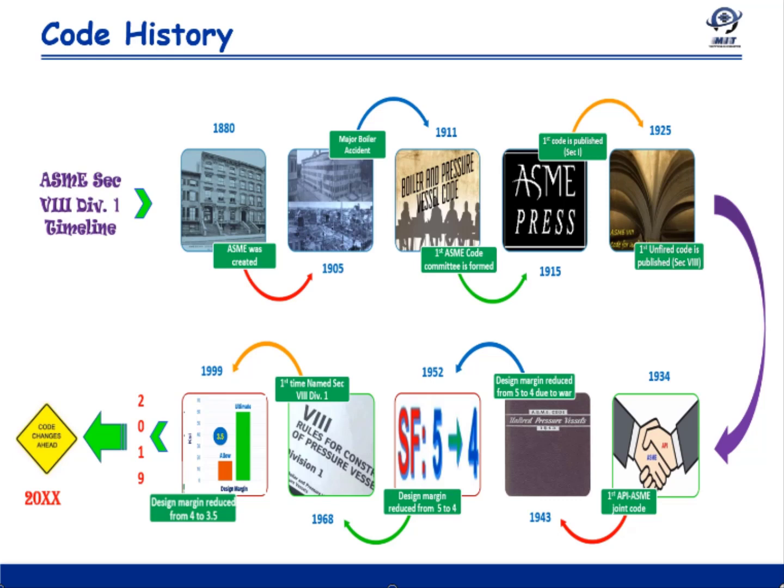In the year 1937, ASME Section 9, the Welding Code, was first published separately. Previously, it was part of Section 8.